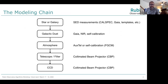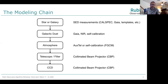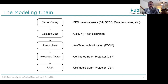The modeling chain goes like this: you have a star or galaxy with some SED measurement — either CALSPEC, Gaia spectrophotometry, photo-z templates, or stellar templates. It goes through some layer of galactic dust, which you can calibrate with Gaia, far infrared observations, or self-calibration from the stars. Then it goes through the atmosphere, calibrated either with the auxiliary telescope as Robert discussed, or through self-calibration via the forward global calibration method I'll be discussing today. It goes through the telescope and filter — well-known from the collimated beam projector — and then down to the CCD, which has its own quantum efficiency as a function of wavelength.